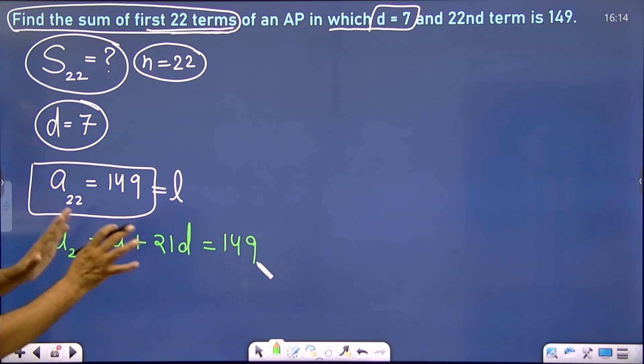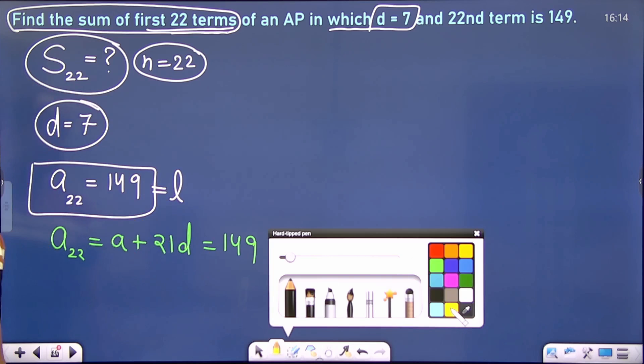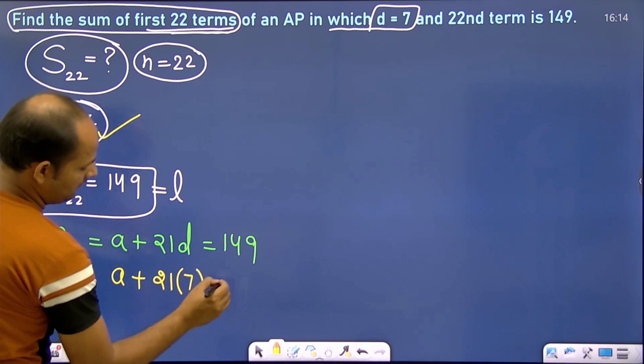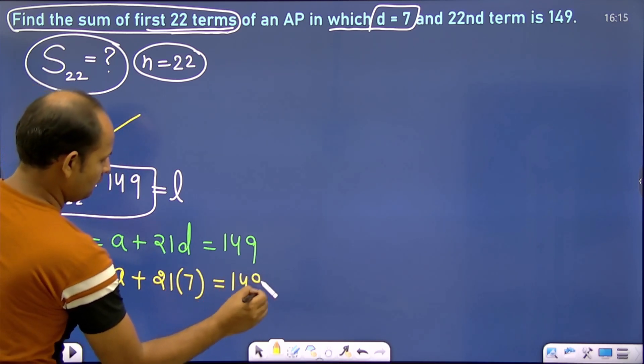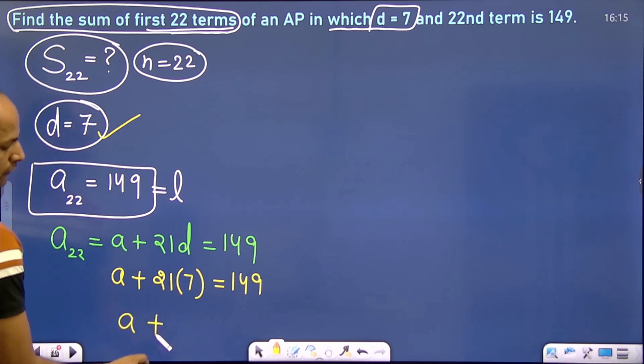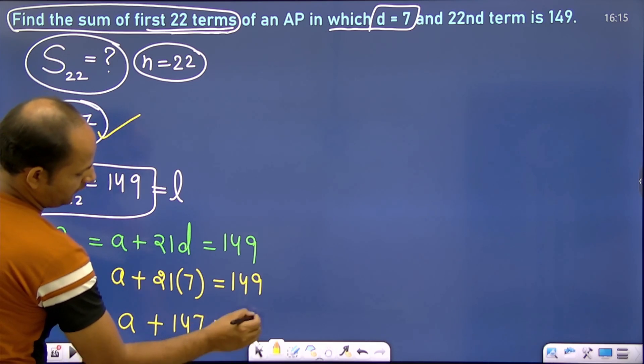We will find a. How much is d? d is given as 7. So a + 21d, this becomes a + 147 = 149.